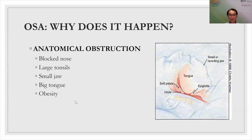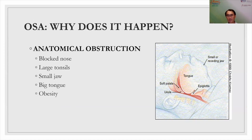There are three reasons why OSA happens. One is an anatomical blockage. The second is a reduction of muscle tone in the throat and tongue during sleep. The third is that the receptors which sense carbon dioxide and oxygen in our body become less sensitive in OSA patients.